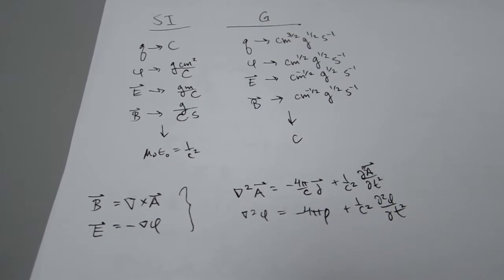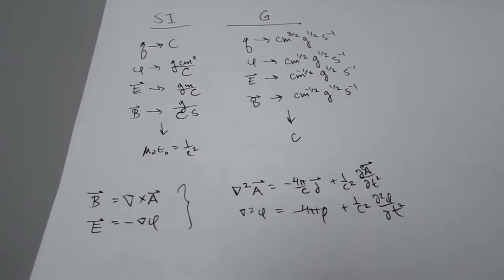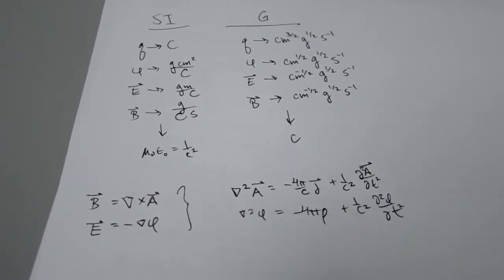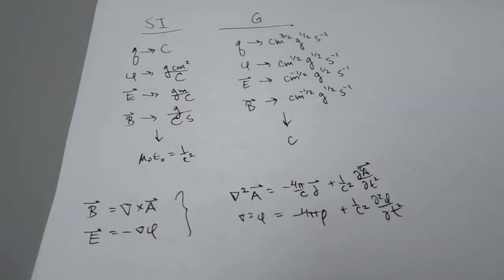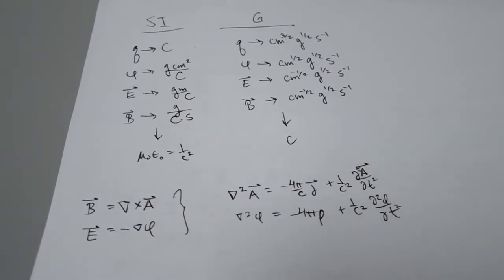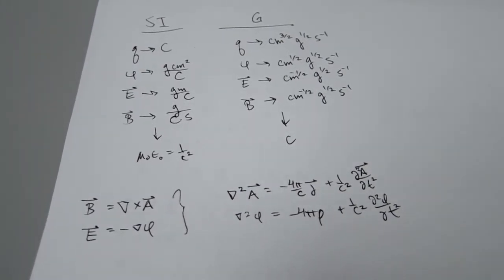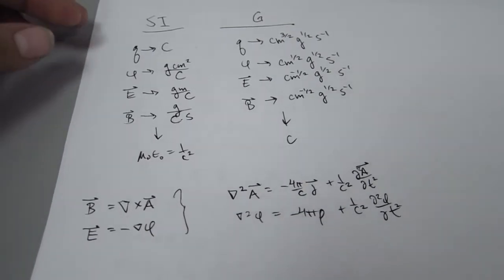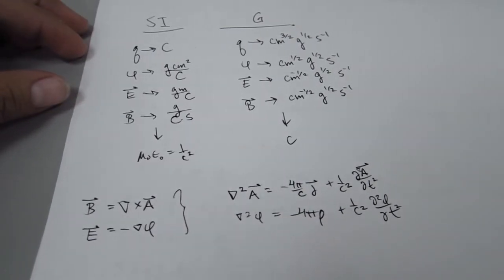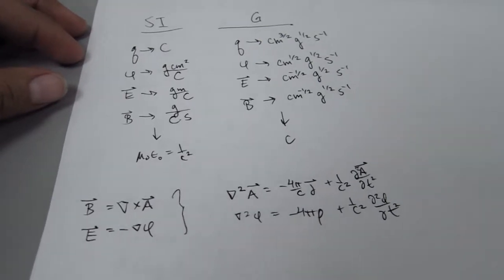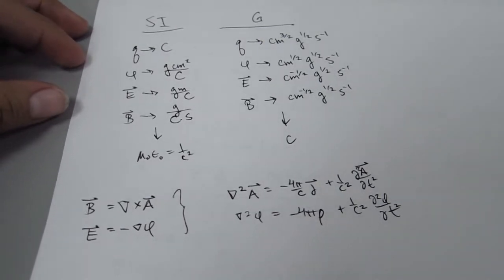This is a quick and half-baked derivation on how Oliver Heaviside came up with Lorentz contraction before Lorentz did. I will be using Gaussian units because it makes a lot more sense.